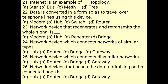Data is converted into a form so as to travel over a telephone line using a modem. A repeater is the network device that regenerates and retransmits the whole signal. A router connects networks of similar types. A gateway connects dissimilar networks. A router is also the network device that sends data optimizing the path, connecting hop by hop.